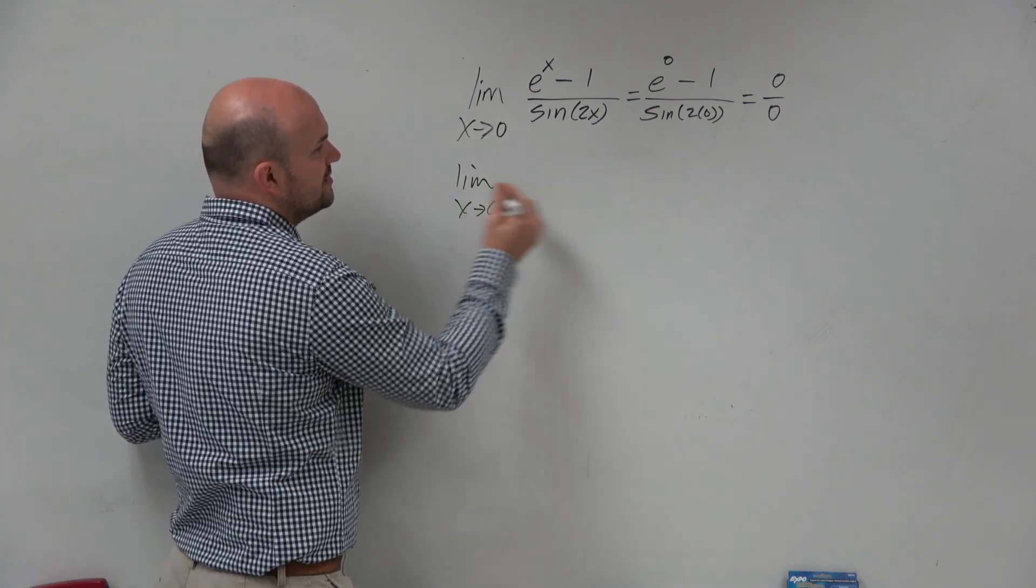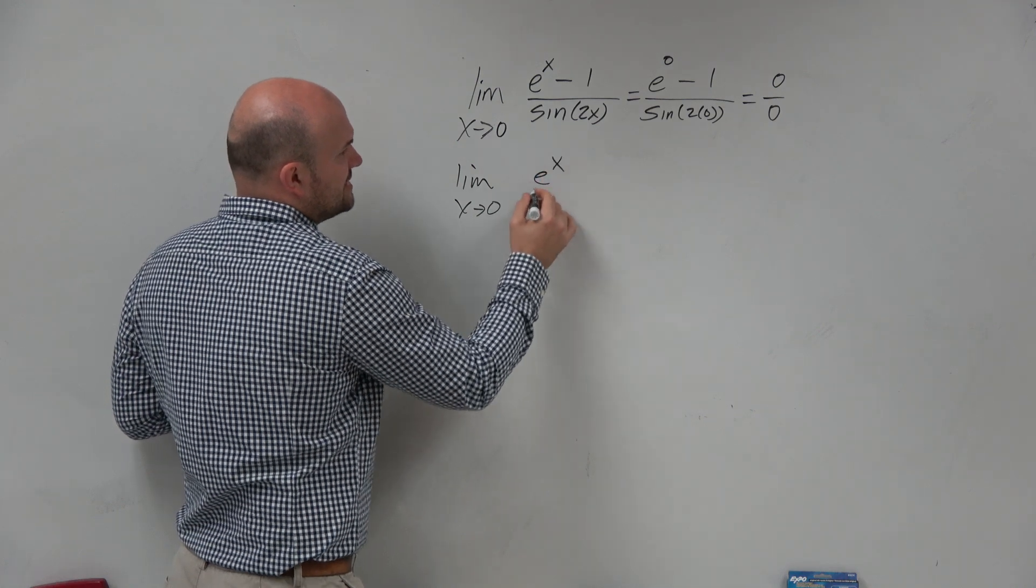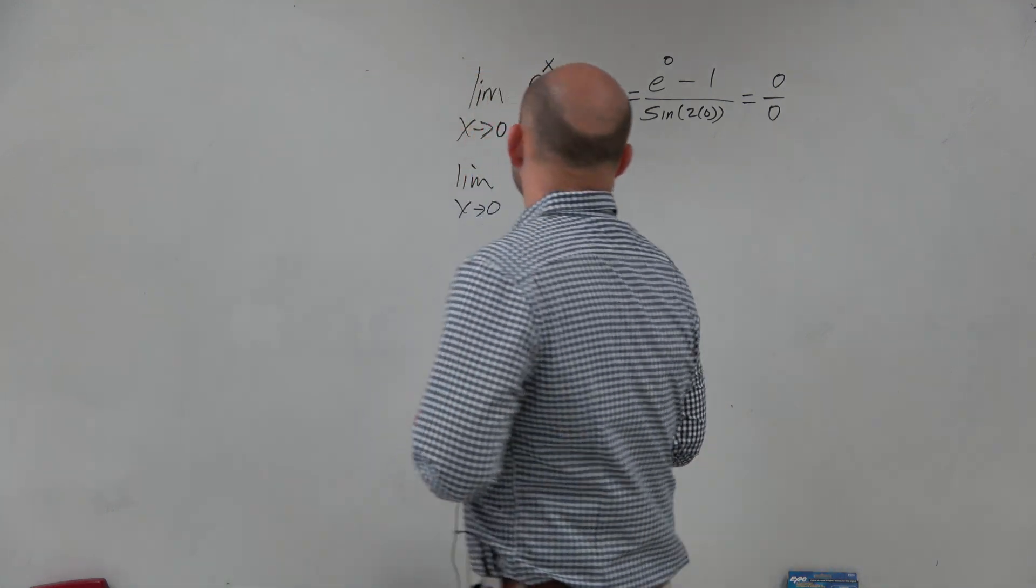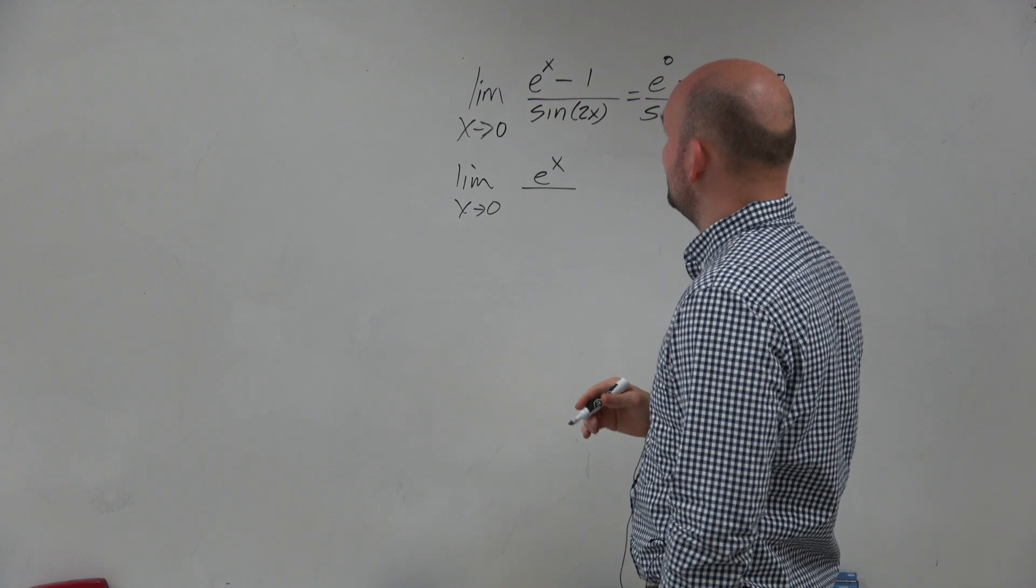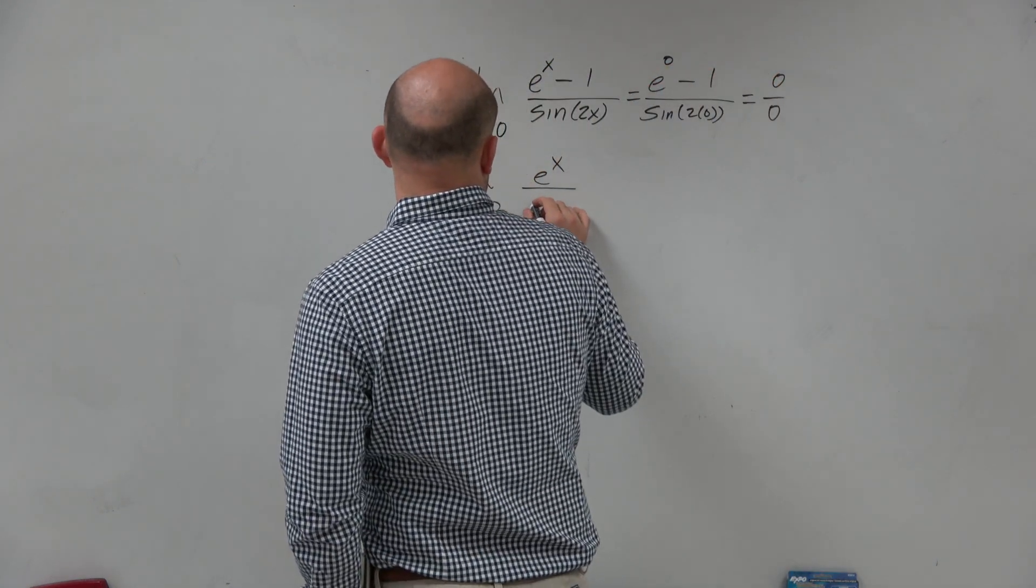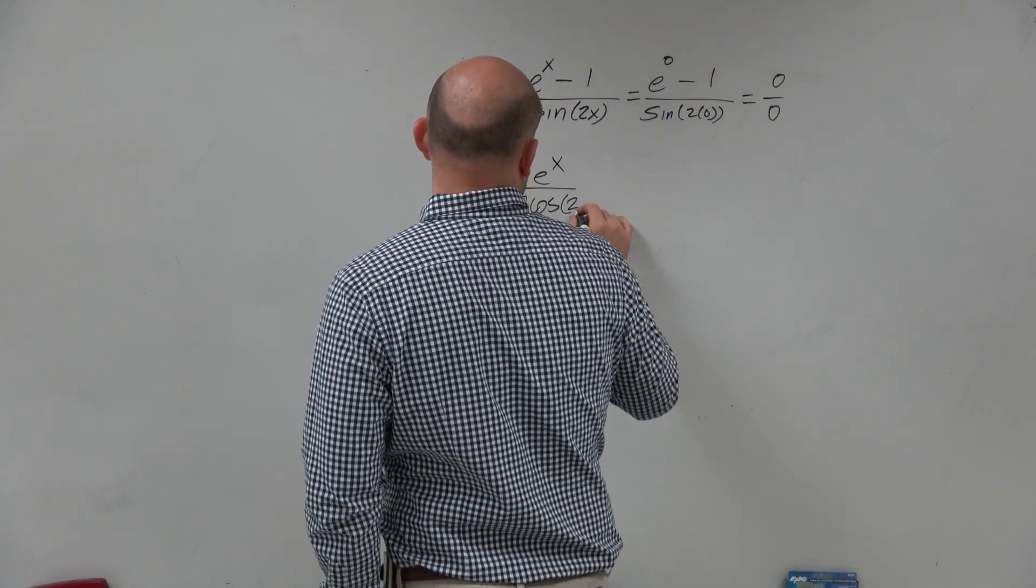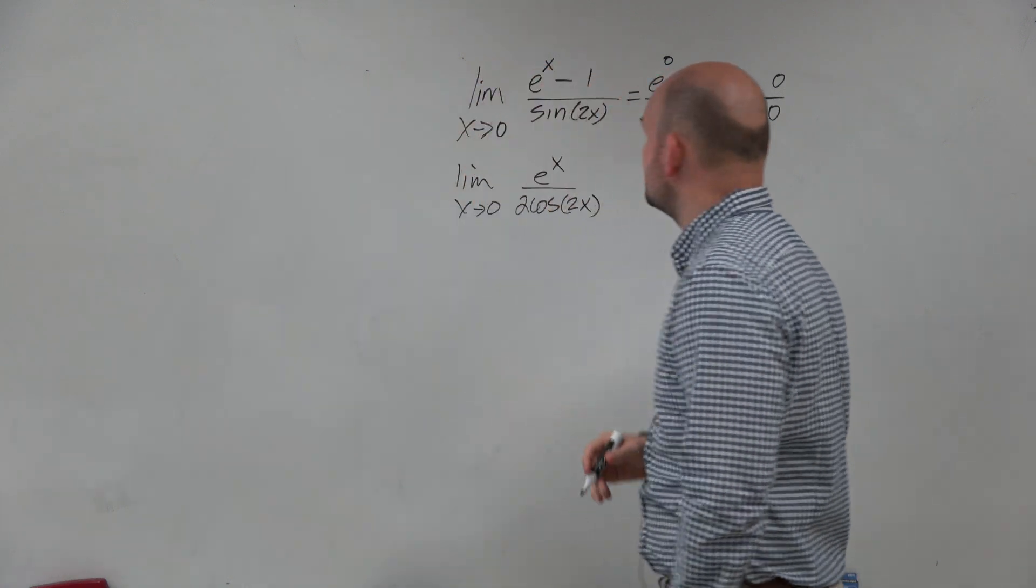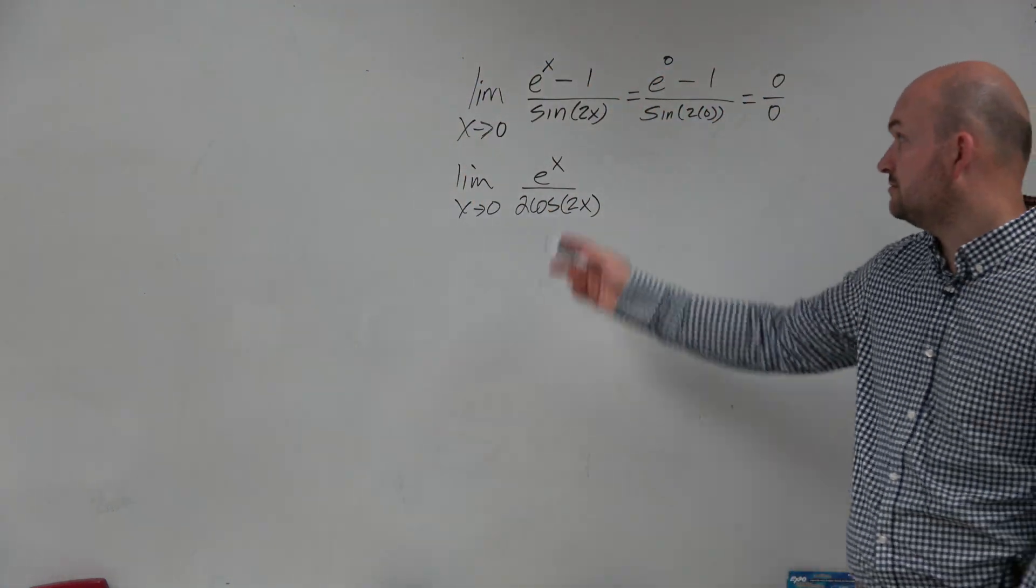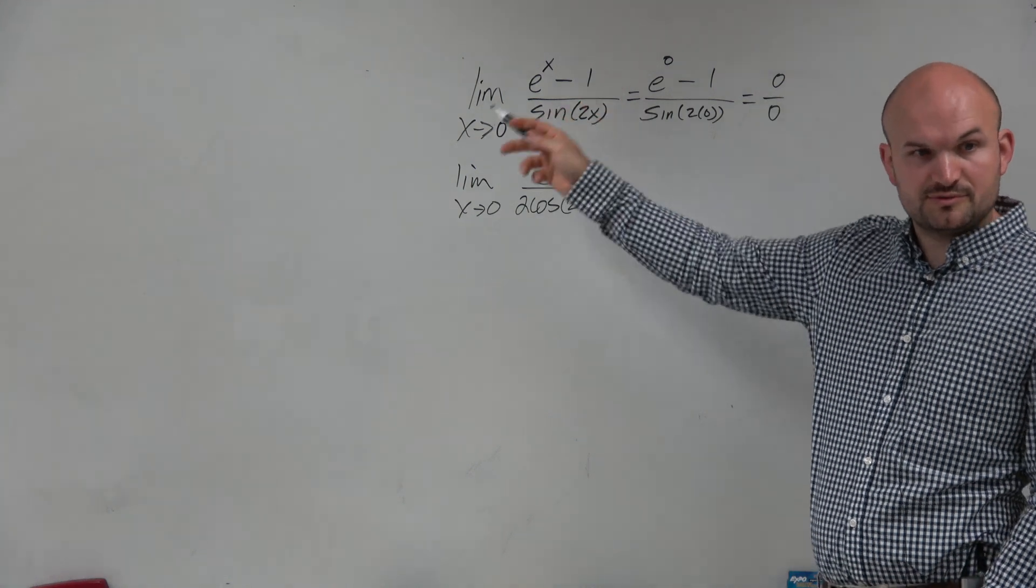So taking the derivative of the numerator is just going to leave us with e to the x. And derivative of the denominator is going to be 2 cosine, be careful, of 2x. Right? Doing a little chain rule. Really, cosine of 2x times 2. And then let's throw the 2 in the front.